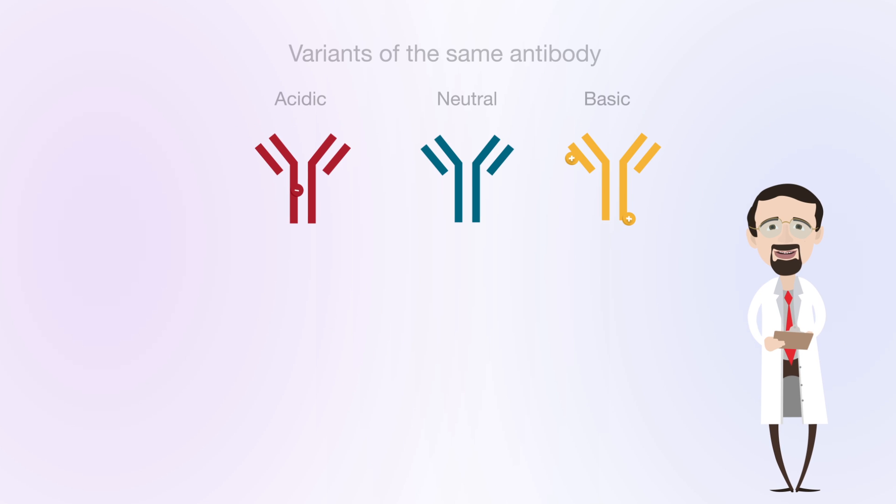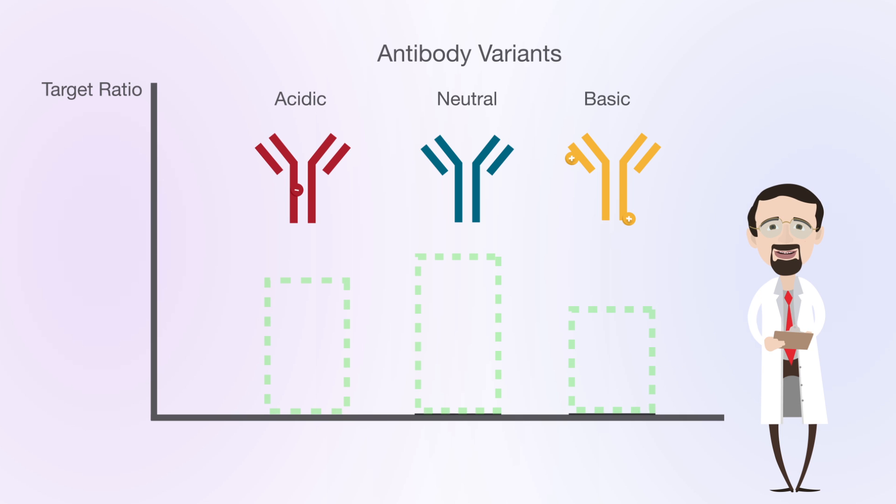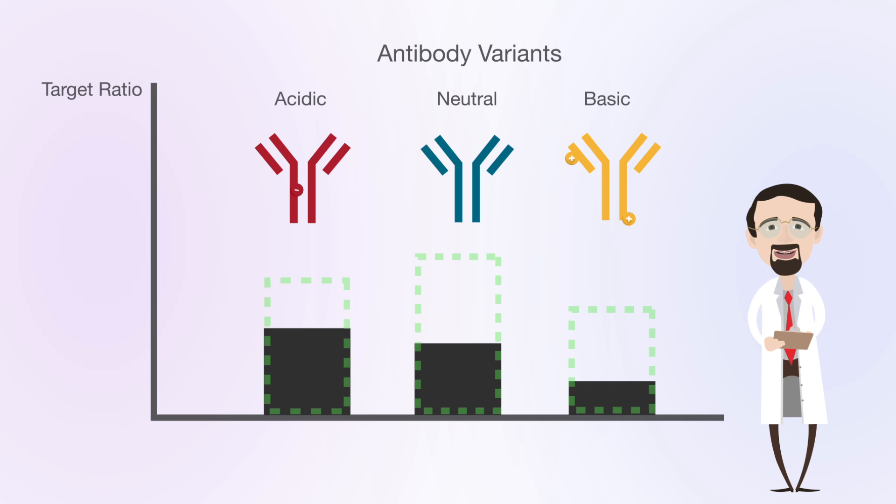Modifications can make the protein more basic or acidic. This results in a protein population that is heterogeneously charged. Small variations in the charge of a protein can reduce drug efficacy or cause an immune response in patients.